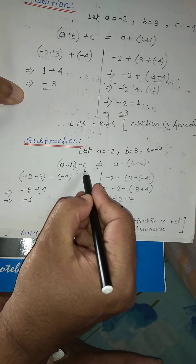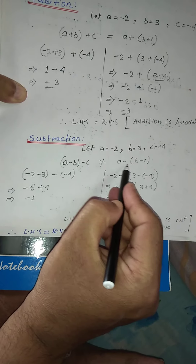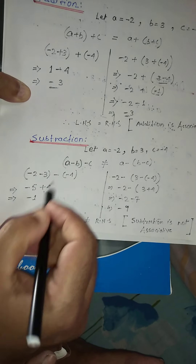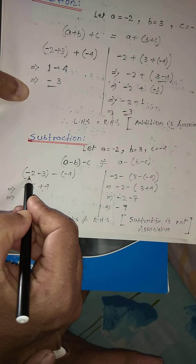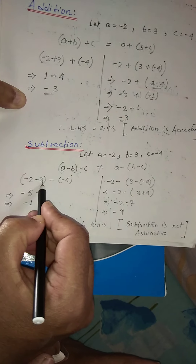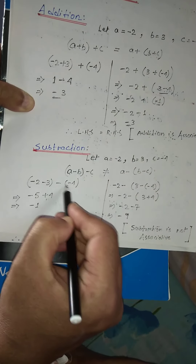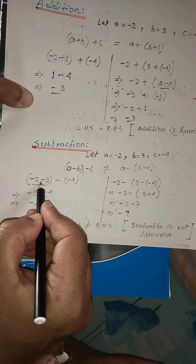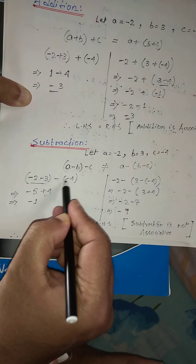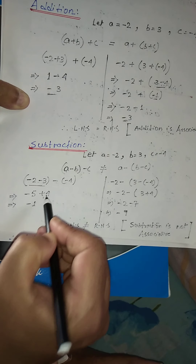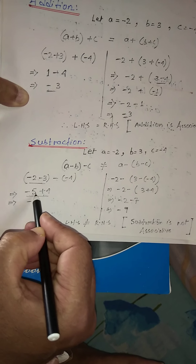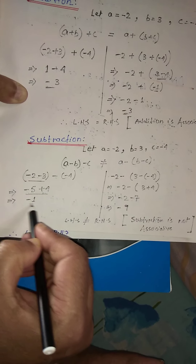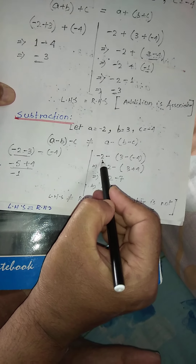Let's go with subtraction, keeping the same values. The property here is: (a − b) − c is NOT equal to a − (b − c). Let's solve the left-hand side: in place of a, minus 2, then minus 3, minus in place of c, minus 4. Solving the bracket: minus minus is plus, so 2 plus 3 is 5, giving minus 5. Then minus minus is plus 4, so minus 5 plus 4 gives minus 1.